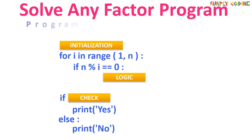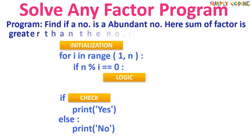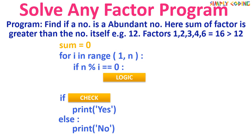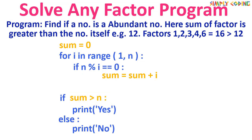Similarly, we will do a program for abundant number, where the sum of factors is greater than the number itself. For example, 12 has factors 1, 2, 3, 4, and 6, which add up to 16, which is greater than 12. In initialization we initialize sum to zero and run the range function with stop value n. In logic we add the factor to sum, and in the check section we check if sum is greater than n.